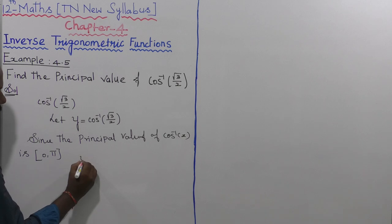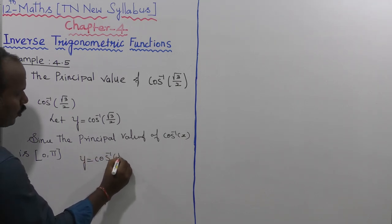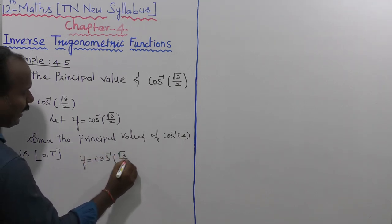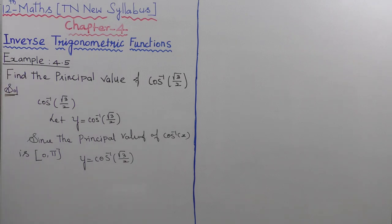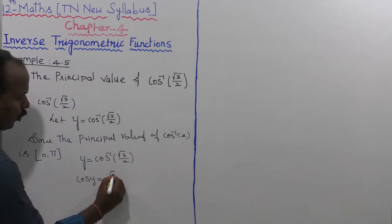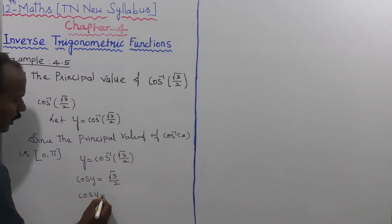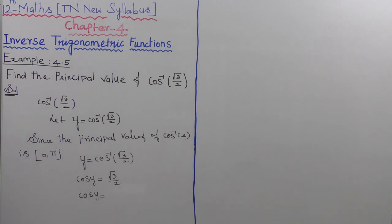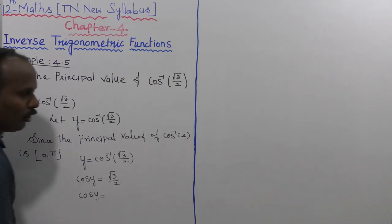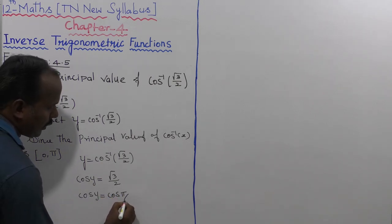Now the given value: let us consider y is equal to cos inverse of root 3 divided by 2. So cos y is equal to root 3 divided by 2. Now cos y equal to root 3 divided by 2 corresponds to cos of π by 6.